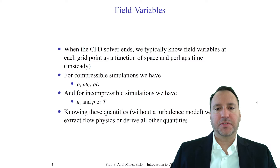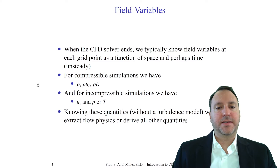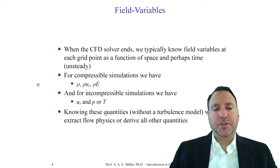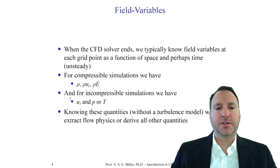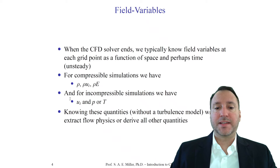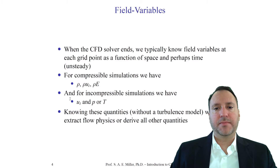In compressible simulations we typically have density, momentum, and some energy term — possibly pressure, temperature, entropy, or another variable. In incompressible flows, you'll almost universally have the velocity field and pressure, because you're solving the continuity and momentum equations. If we know these quantities without a turbulence model, we still need to extract flow physics and derive all other quantities. Note that turbulence models represent additional field variables, which we'll look at in the future turbulence module.